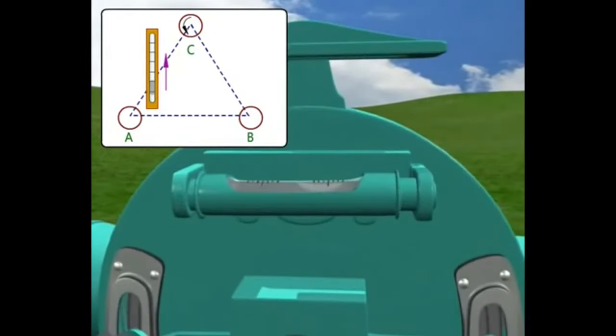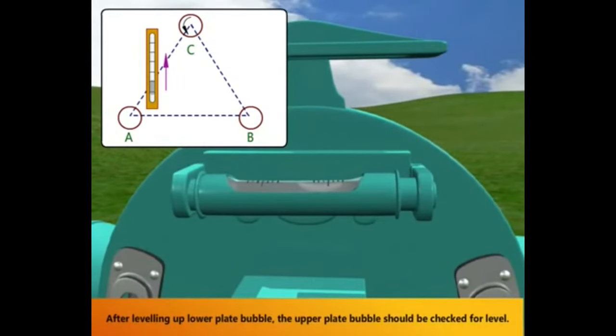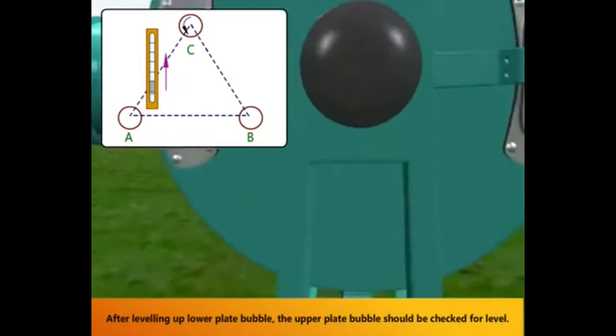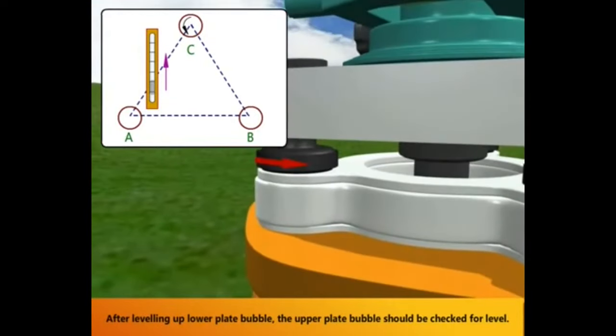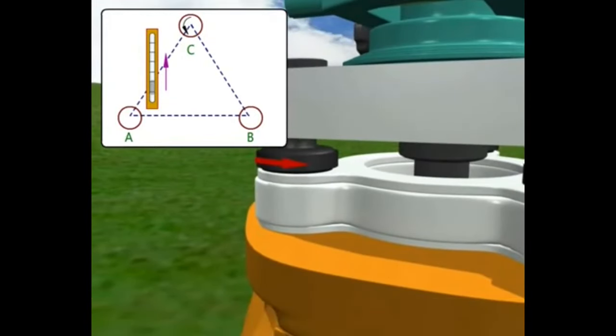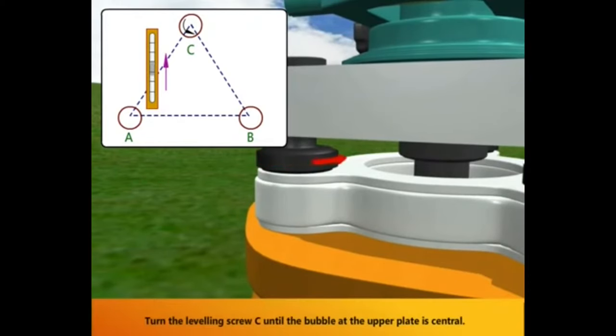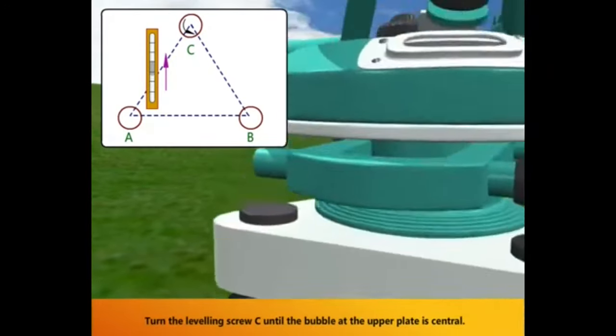Leveling up upper plate bubble. After leveling up lower plate bubble, the upper plate bubble should be checked for level. Turn the leveling screw C until the bubble at the upper plate is central.